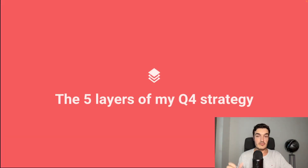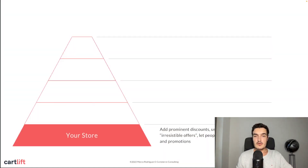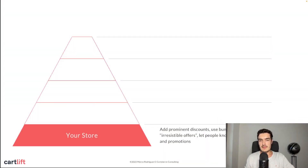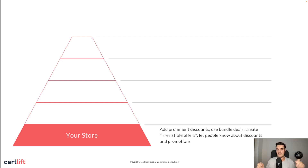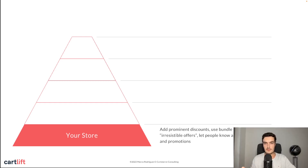Let's look at the five layers of my Q4 strategy. At the very base, we need to talk about your store. You should add some prominent discounts, use bundle deals, create irresistible offers wherever you can, and let people know about discounts and promotions. Your store needs to scream, 'Hey, we have sales going on, we have bundles, we have something interesting.' Not just a small note saying '20% off' somewhere — it needs to clearly show people that you have something special for Q4, Black Friday, Christmas, etc.